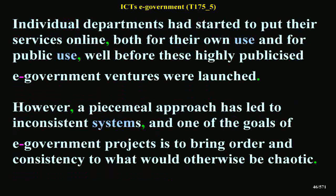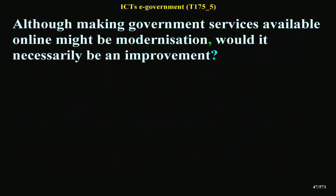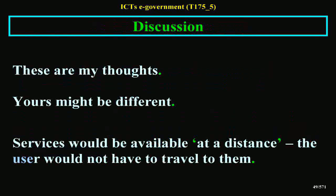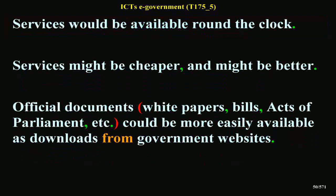However, a piecemeal approach has led to inconsistent systems, and one of the goals of e-government projects is to bring order and consistency to what would otherwise be chaotic. Although making government services available online might be modernization, would it necessarily be an improvement? Activity 2 Exploratory: Try to think of some clear advantages of electronic delivery of government services. Discussion — these are my thoughts: services would be available at a distance — the user would not have to travel to them; services would be available around the clock; services might be cheaper and might be better.